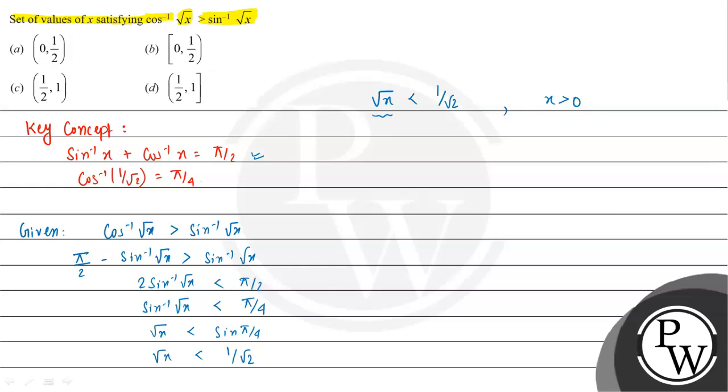So x will be greater than 0, and the other condition is that x is less than 1 by 2. So that will be x belongs to 0 to 1 by 2, and this is the final answer of the given question.